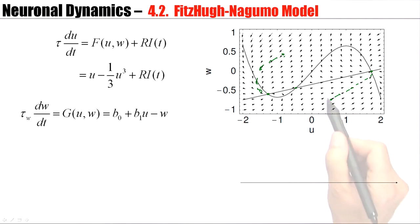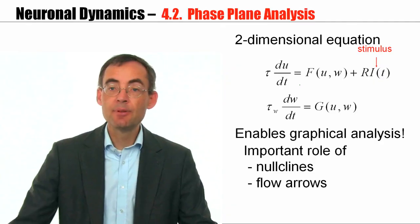So, from any initial condition, I can construct flow patterns, which will end at one of the fixed points. And in this case, we would have two stable fixed points here and there. This fixed point is unstable. The flow is away from the fixed point.